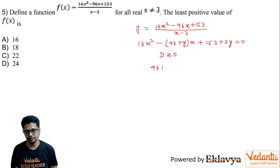So here you have 96 plus y whole square minus 4 times 16 which is 64 times 3y plus 153 is supposed to be greater than or equal to 0.